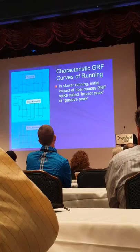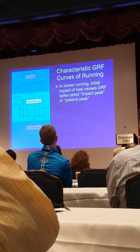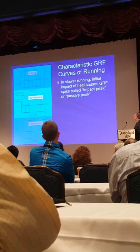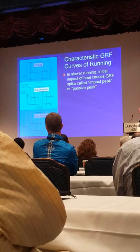In slower running — typically a rear foot strike, since 90% of runners are rear foot strikers — there is a heel strike impact peak. This impact peak is our passive peak, followed by a propulsive peak. The stance duration is under 250 milliseconds — about a quarter of a second — corresponding to the initial strike of the heel on the ground.